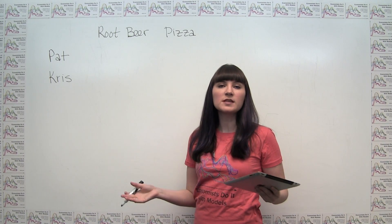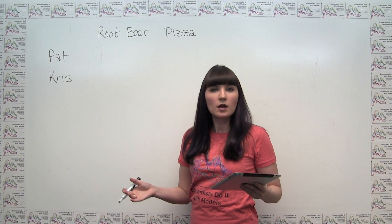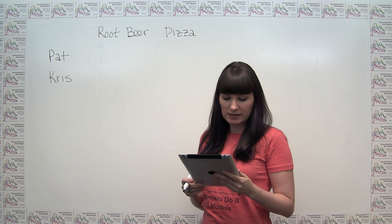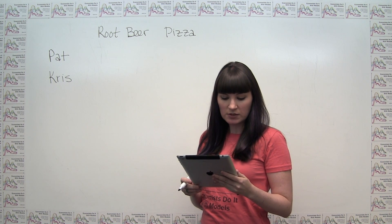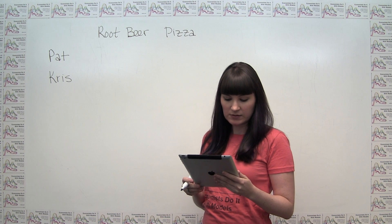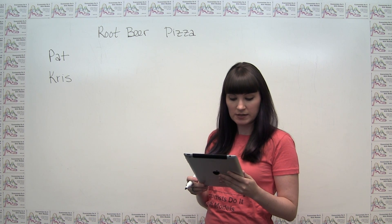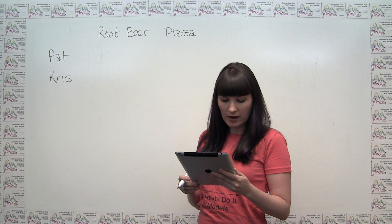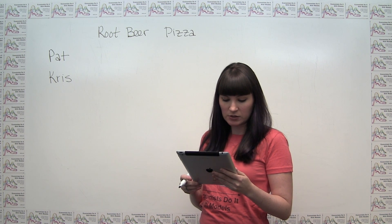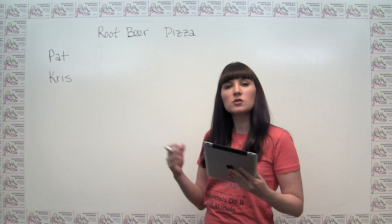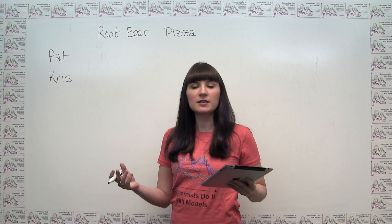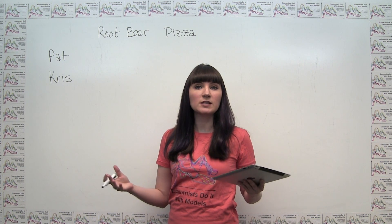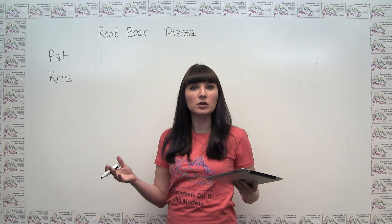The first thing we have to do is set up the problem. The introduction goes like this: Pat and Chris are roommates. They spend most of their time studying, but they leave some time for their favorite activities — making pizza and brewing root beer. Pat takes four hours to brew a gallon of root beer and two hours to make a pizza. The problem is giving us information about how productive the two people are at making the two goods.